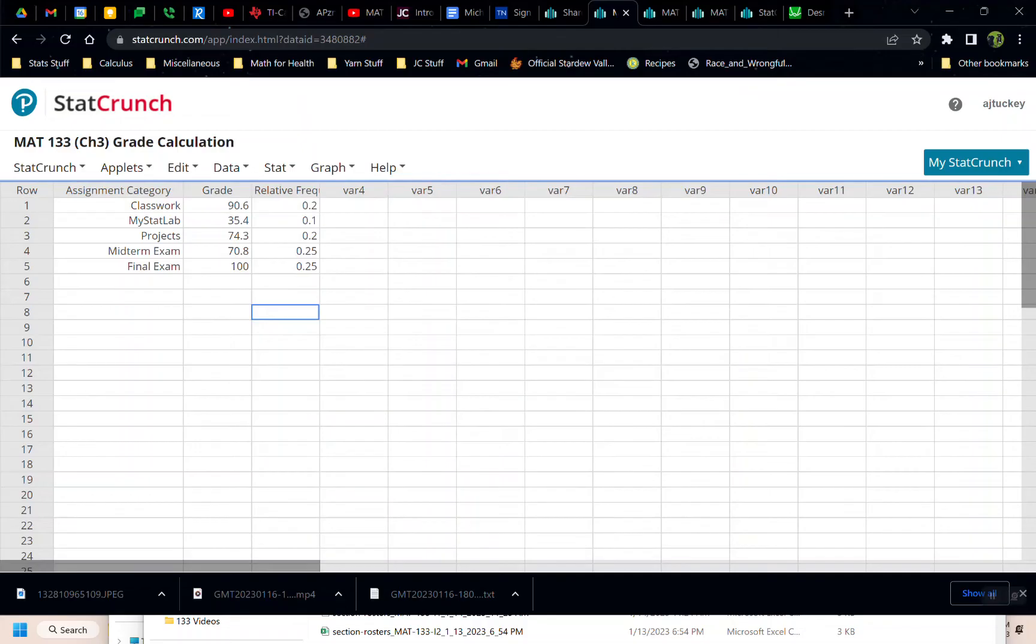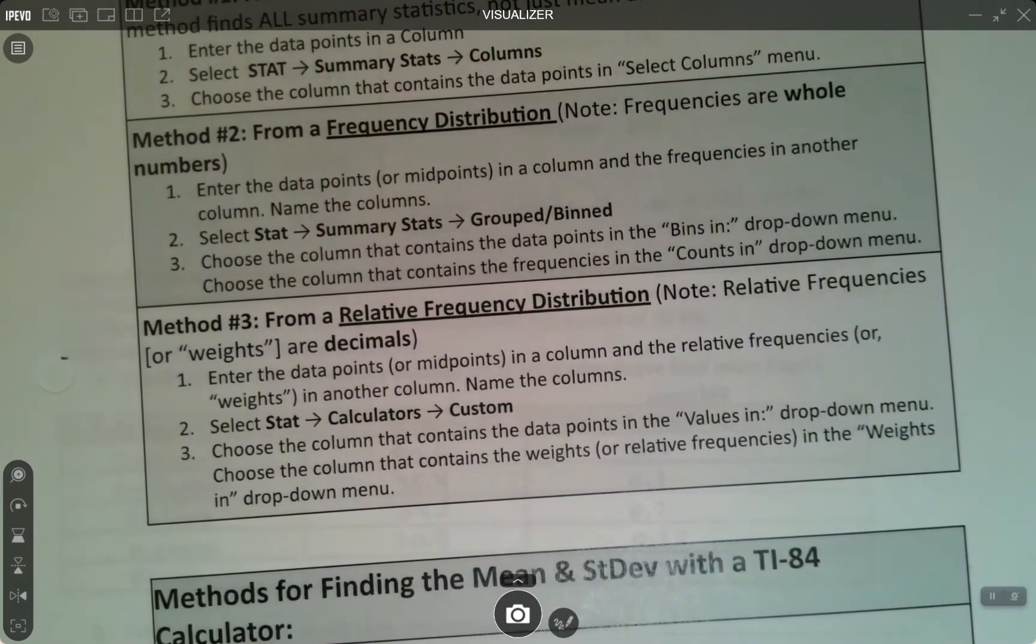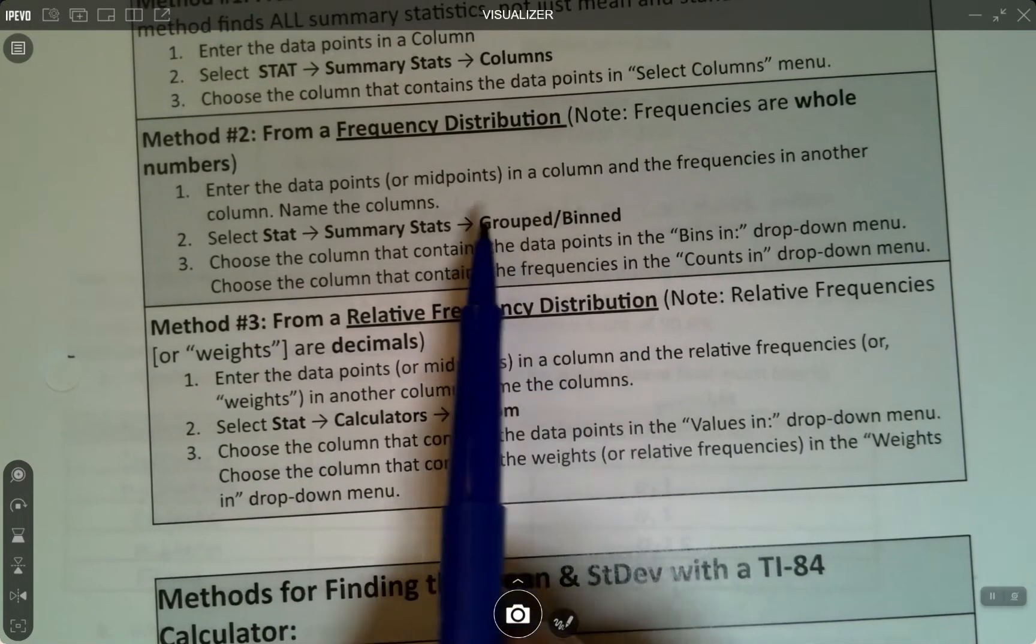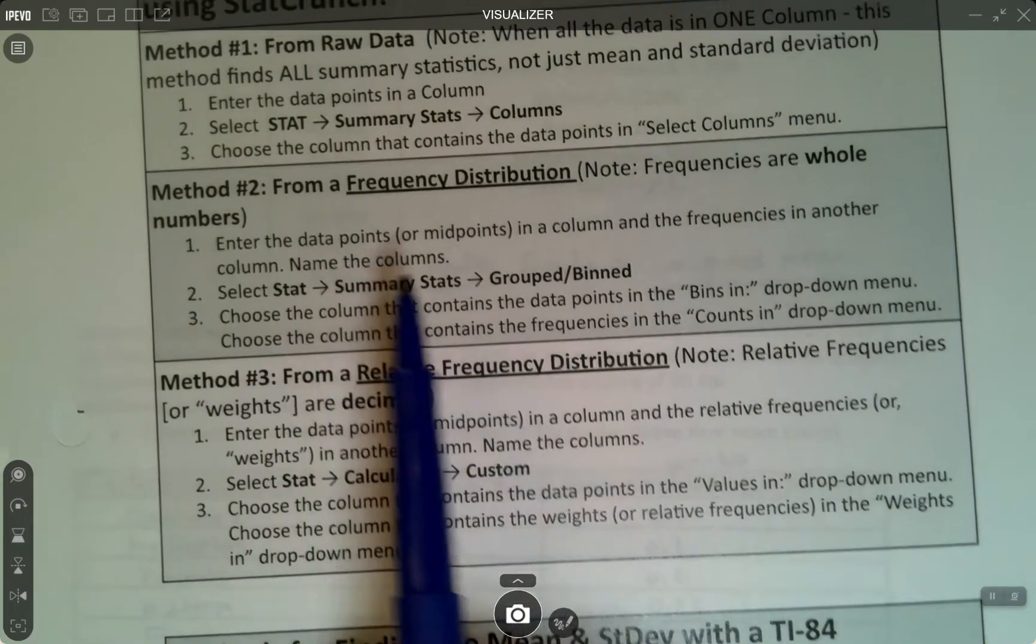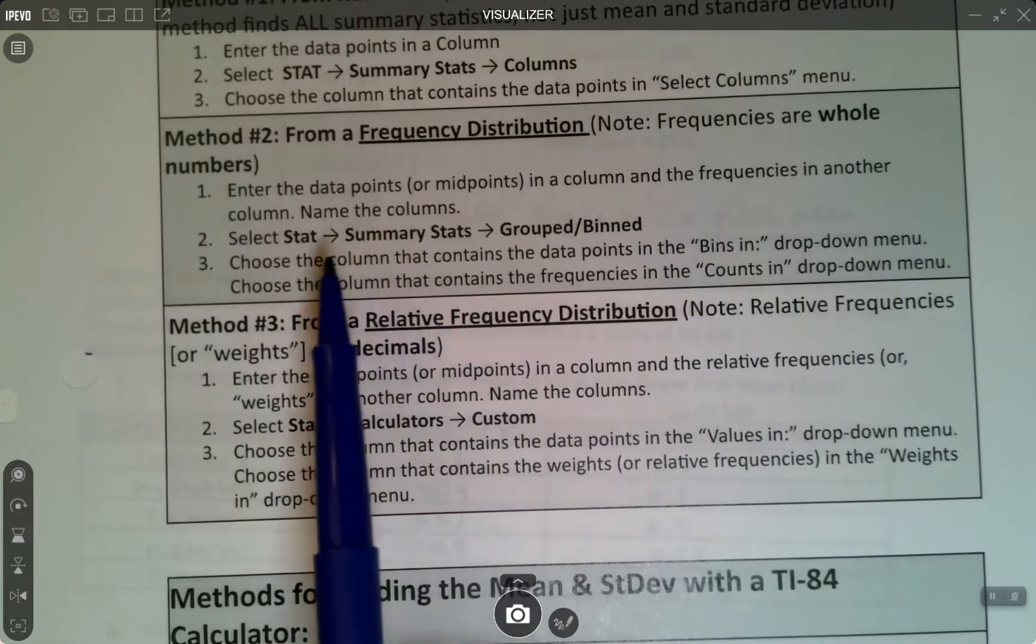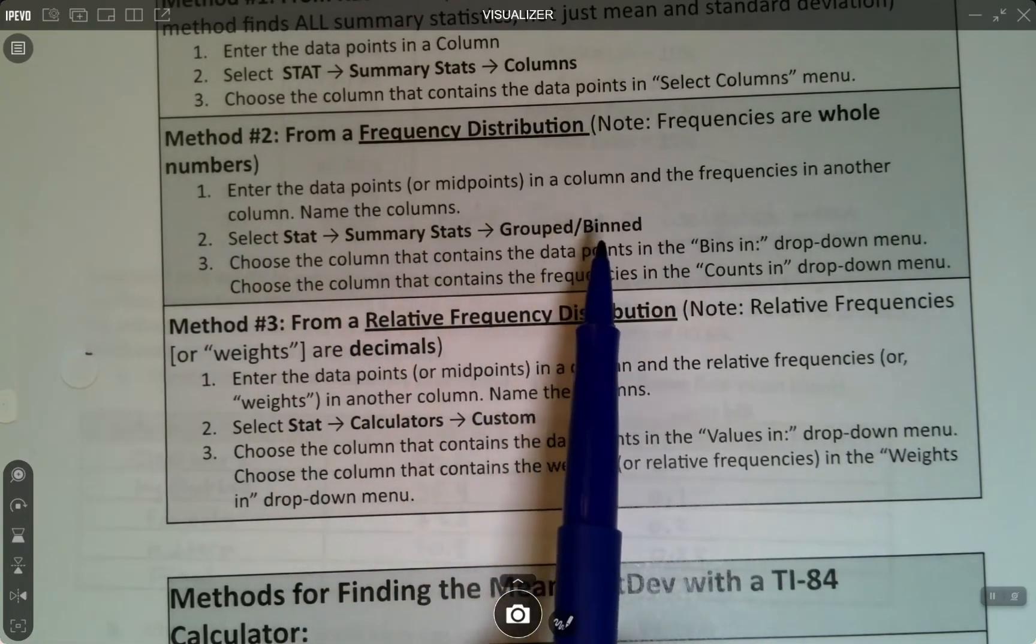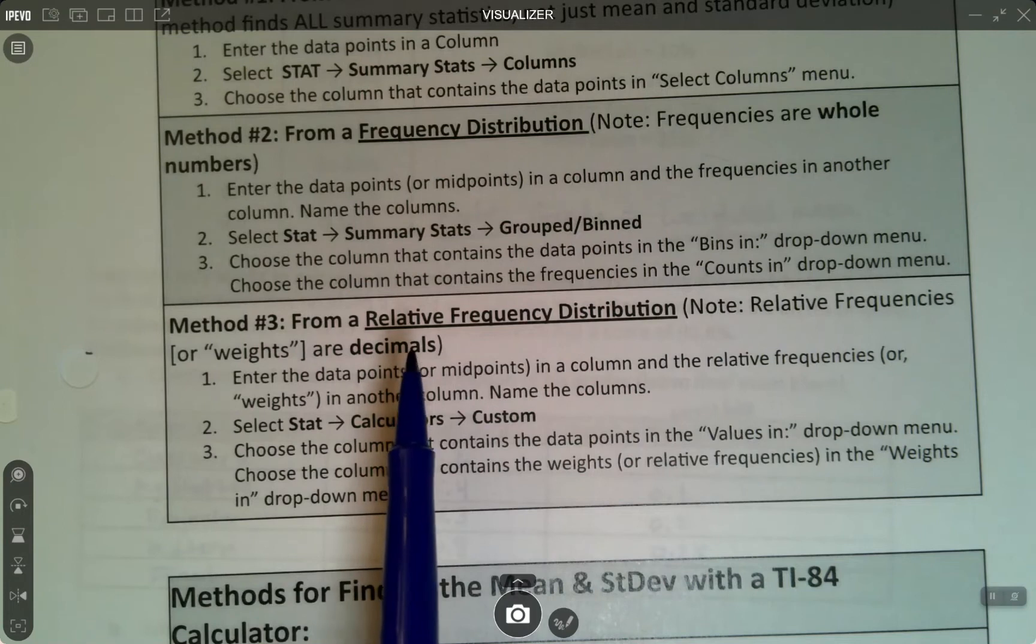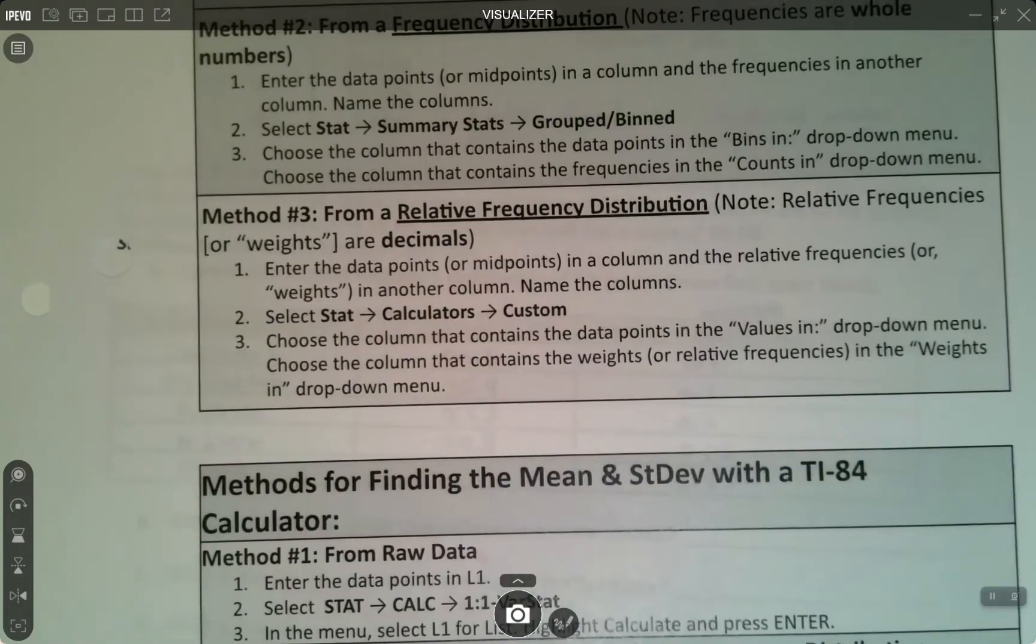What we're going to do is a different technique in StatCrunch that we haven't done before. It's mentioned on the instructions page for the technology. For a relative frequency distribution, when we're working with decimals, we have to go stat calculators custom. We've been doing grouped bind for section 3-3. But if their weights are relative frequencies, if they're decimals, then we have to use this.